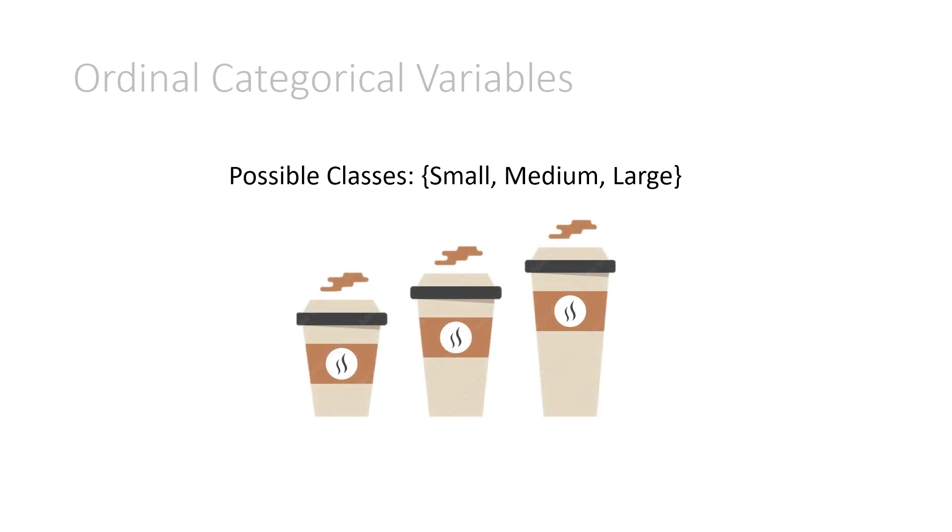Now, we'll compare these to ordinal categorical variables. A good example would be the possible classes are small, medium, and large. And maybe we're referring to the size of a coffee. They could either be a small, a medium, or a large coffee. So this is still categorical because it must be one of these three different classes. However, it is considered ordinal because there is an obvious ordering to these classes.